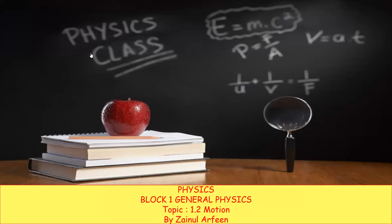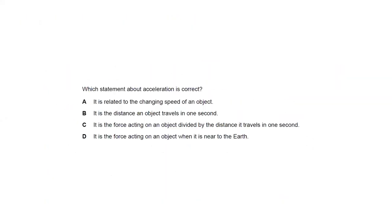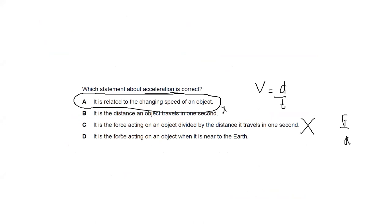Every Tuesday, submit your weekly homework before 1 pm — it is compulsory for everyone. Every Sunday, send your class notes for physics and chemistry. Acceleration means it is a change in speed or change in velocity, which is why A is the right answer. Distance traveled divided by time is speed, not acceleration. Force divided by distance and force near Earth are both wrong. Physics homework will be shared today.